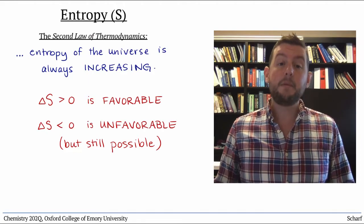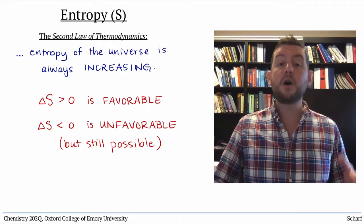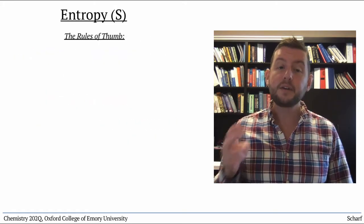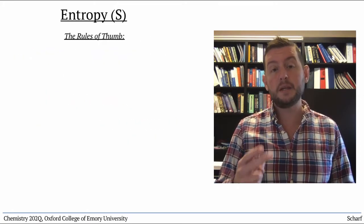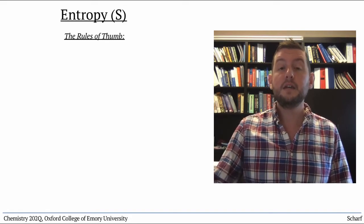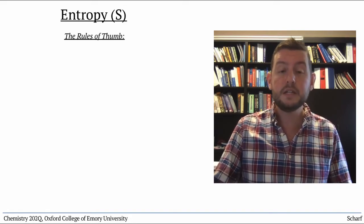Physical and chemical changes are almost always accompanied by changes in entropy. And there are two key rules of thumb that help us predict whether a chemical or physical process involves an increase or a decrease in entropy.